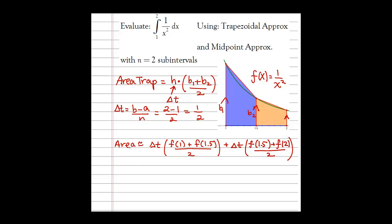To evaluate this, I'll do a bit of algebra to simplify. I factor out the delta t common to both terms, and since both terms are divided by 2, I pull that out as multiplication by one half. What remains is: the height at the left endpoint, plus two times the height at the middle endpoint, plus the height at the right endpoint. The factor of 2 appears because the height at 1.5 belongs to two separate trapezoids and is counted twice.